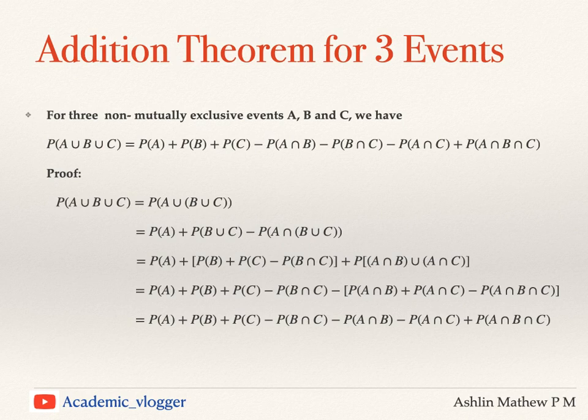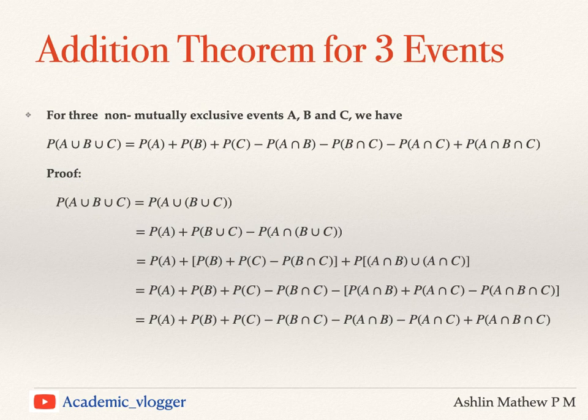We are going to check the proof for this addition theorem for three events. We write probability of A union B union C as probability of (A) union (B union C), where B union C is considered as a single variable. We can then apply the addition theorem for two events, where the first event is A and the second event is B union C, giving us probability of A plus probability of B union C minus probability of A intersection (B union C).